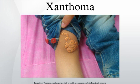Xanthoma tuberosum – Xanthoma tuberosum is characterized by xanthomas located over the joints. Xanthoma tendinosum – Xanthoma tendinosum is clinically characterized by papules and nodules found in the tendons of the hands.